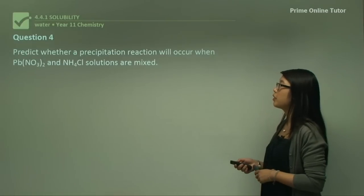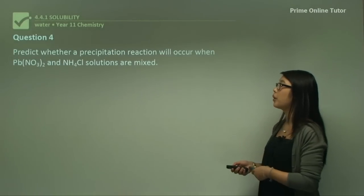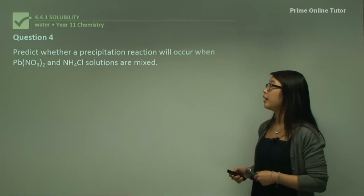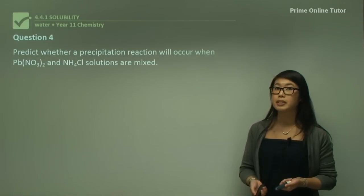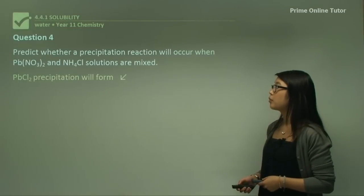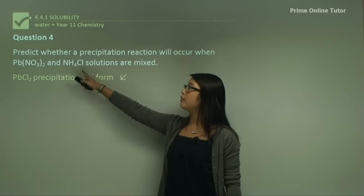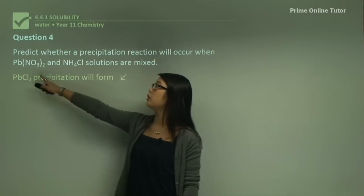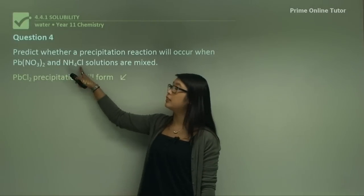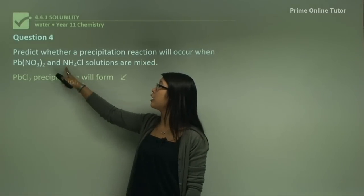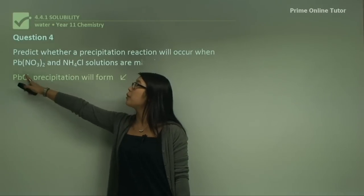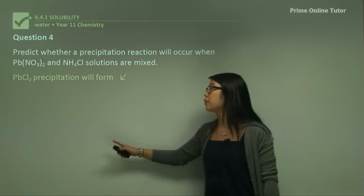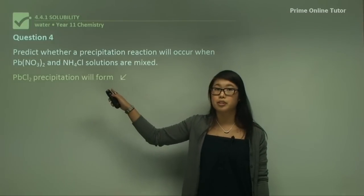Question four: predict whether a precipitation reaction will occur when Pb(NO₃)₂ and NH₄Cl solutions are mixed together. The lead chloride (PbCl₂) that forms when the two are mixed will precipitate out. The NH₄⁺ is going to be a spectator ion, while Pb²⁺ and Cl⁻ bind together, forming a bond and causing it to precipitate out.